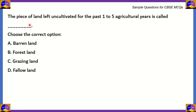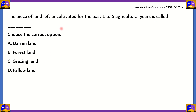Next question. The piece of land left uncultivated for the past one to five agricultural years is called — barren land, forest land, grazing land, or fallow land? Which of these is the correct option?